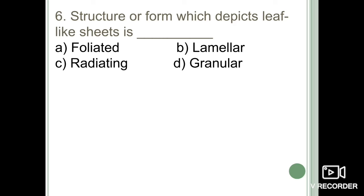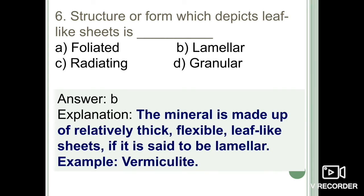Next question: a structure or form that depicts leaf-like sheets is known as — foliated, lamellar, radiating, or granular? If a mineral is made up of relatively thick flexible leaf-like sheets, it is said to be lamellar in form. The best example is vermiculite. The correct option is option B: lamellar.